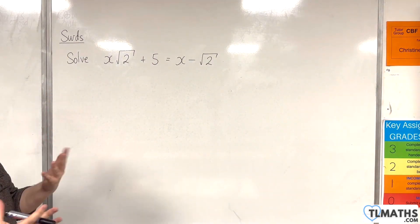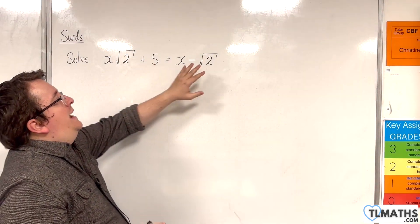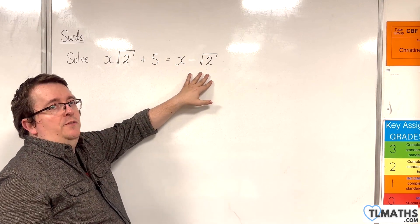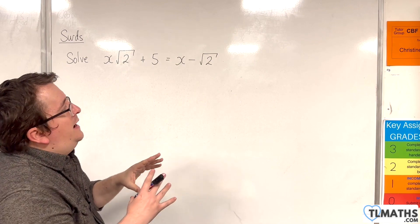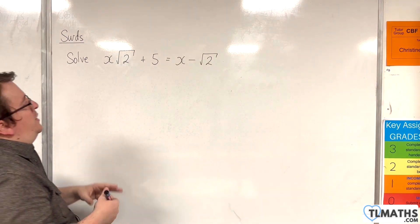The reason why I wouldn't do it that way is because I'm going to end up with -√2 minus 5. Too many negatives. I don't want to have to deal with them. So it's just a choice of rearrangement here.